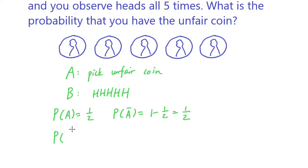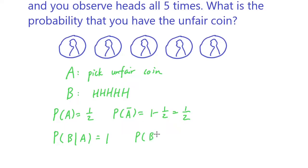Let's use the other information. What is the probability of getting five heads if you pick the unfair coin? The probability is actually one, because if you pick the unfair coin, you can only get heads — so you're going to get heads all five times at 100%. On the other hand, the probability of getting five heads if you have the fair coin will be one half to the fifth, so 1 over 32.